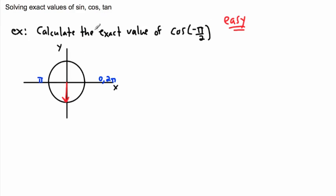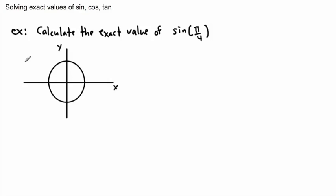Cosine asks for the x-value. Remember, cosine of theta is the x-value and sine of theta is the y-value. So in this case, just look at the x-value. The x-value is 0 here — the y-value is negative 1, but the x-value is 0. So the answer is 0. That was easy. Let's do more difficult ones now.